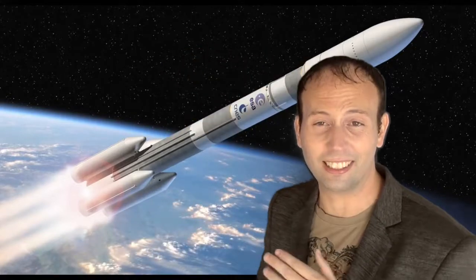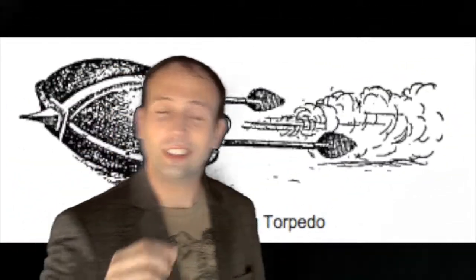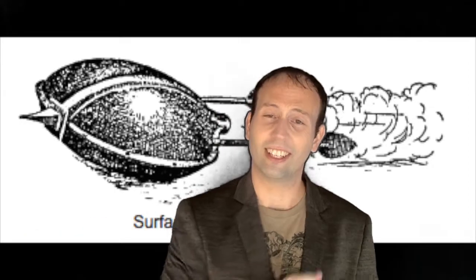Froissart's idea was the forerunner of the modern bazooka. Joanes de Fontana of Italy designed a surface-running rocket-powered torpedo for setting enemy ships on fire.